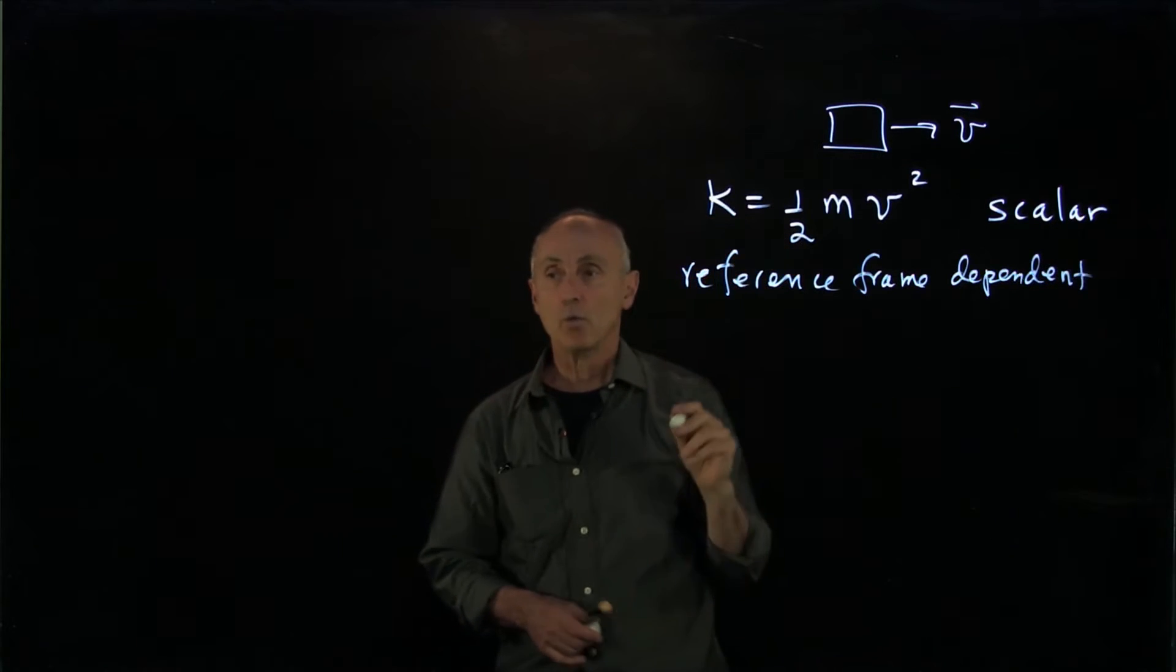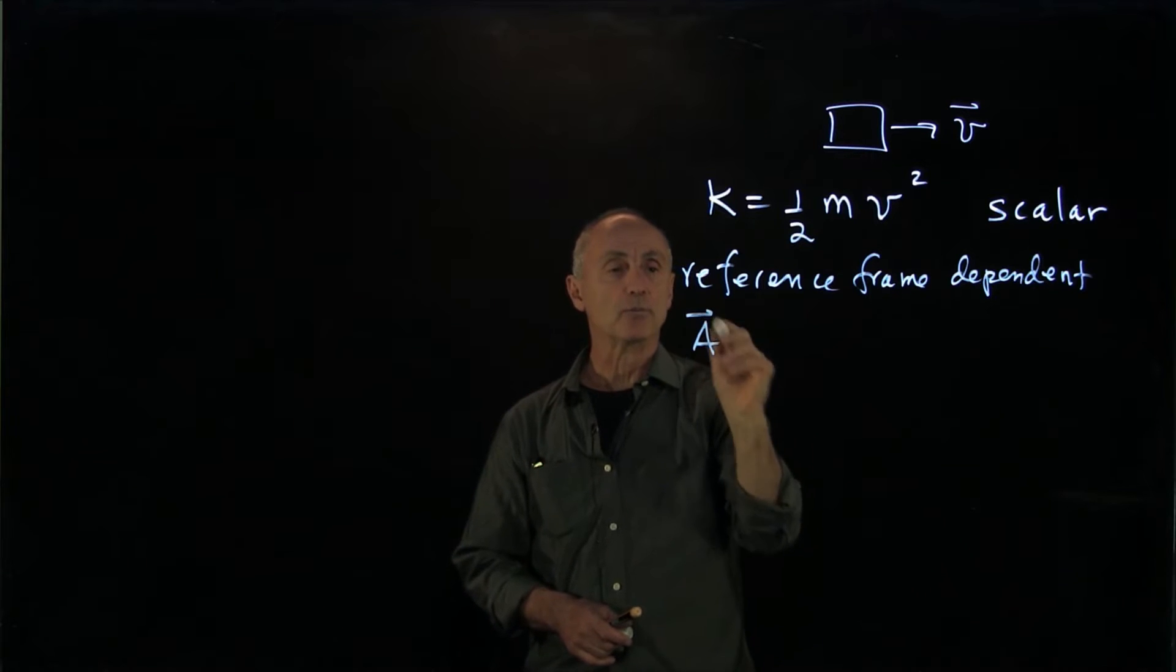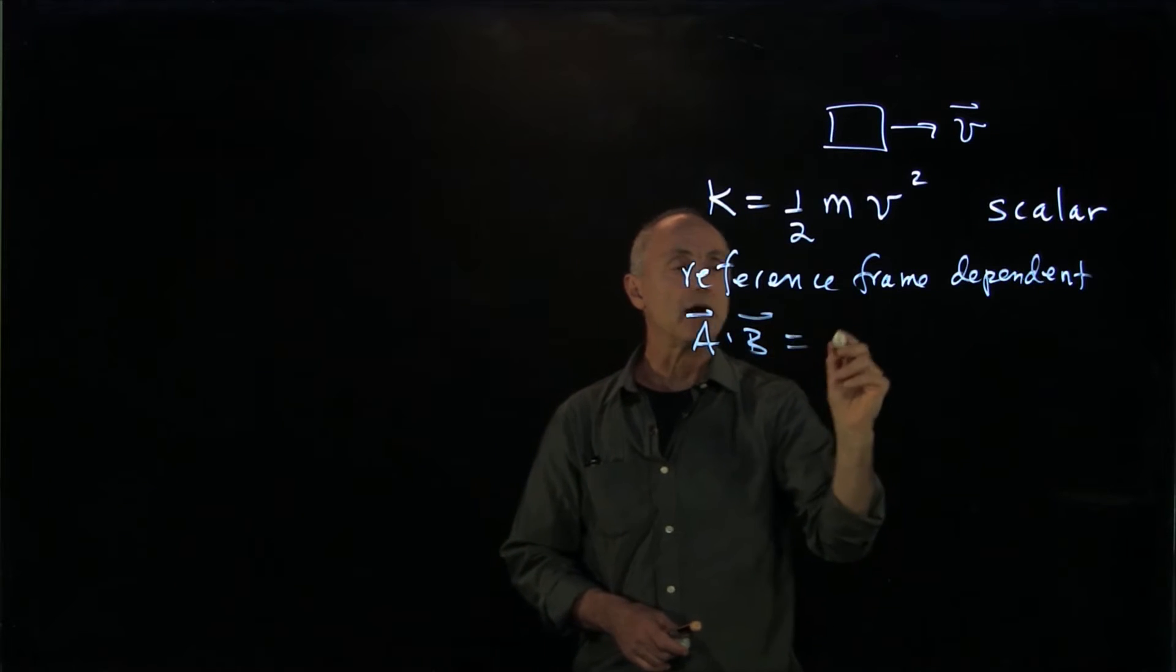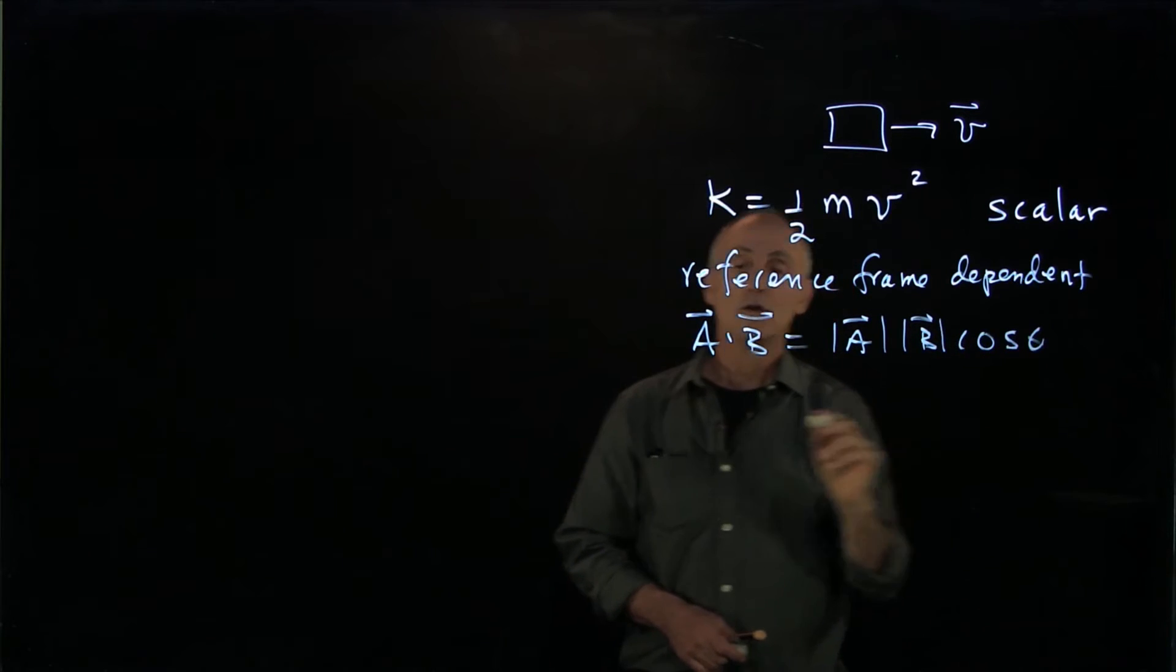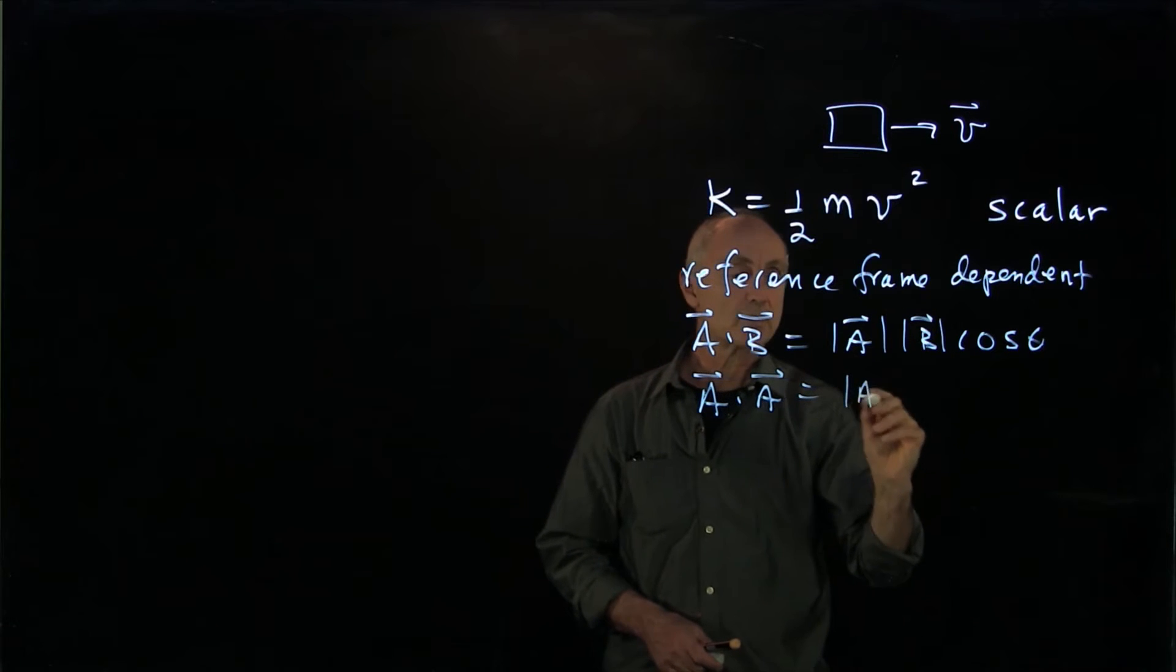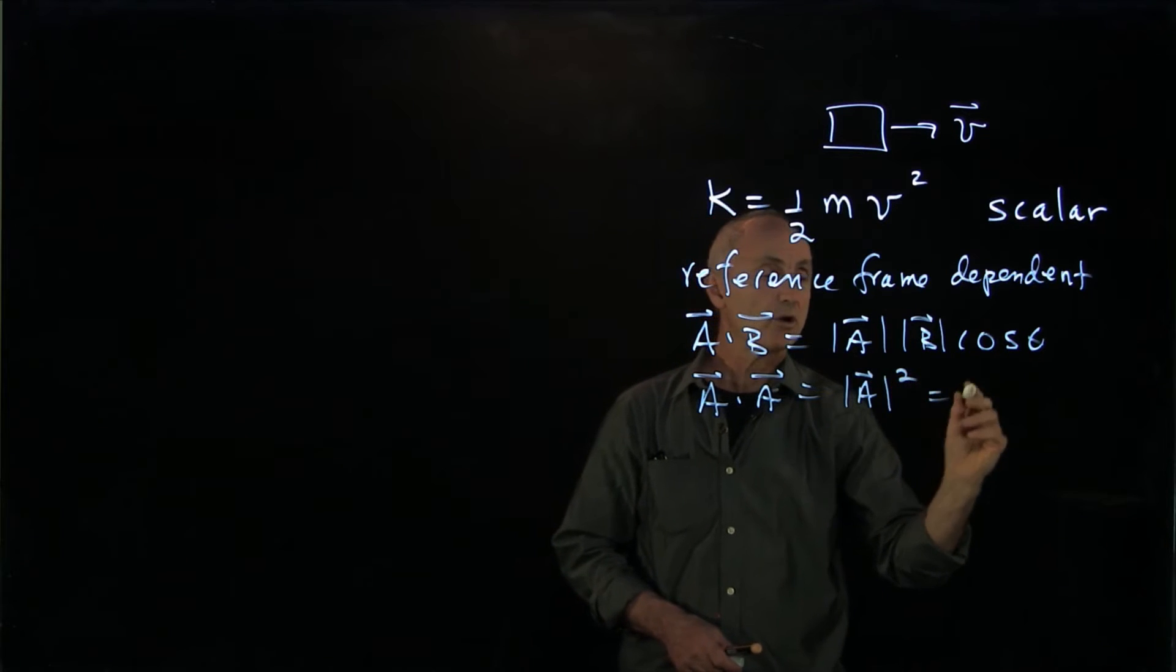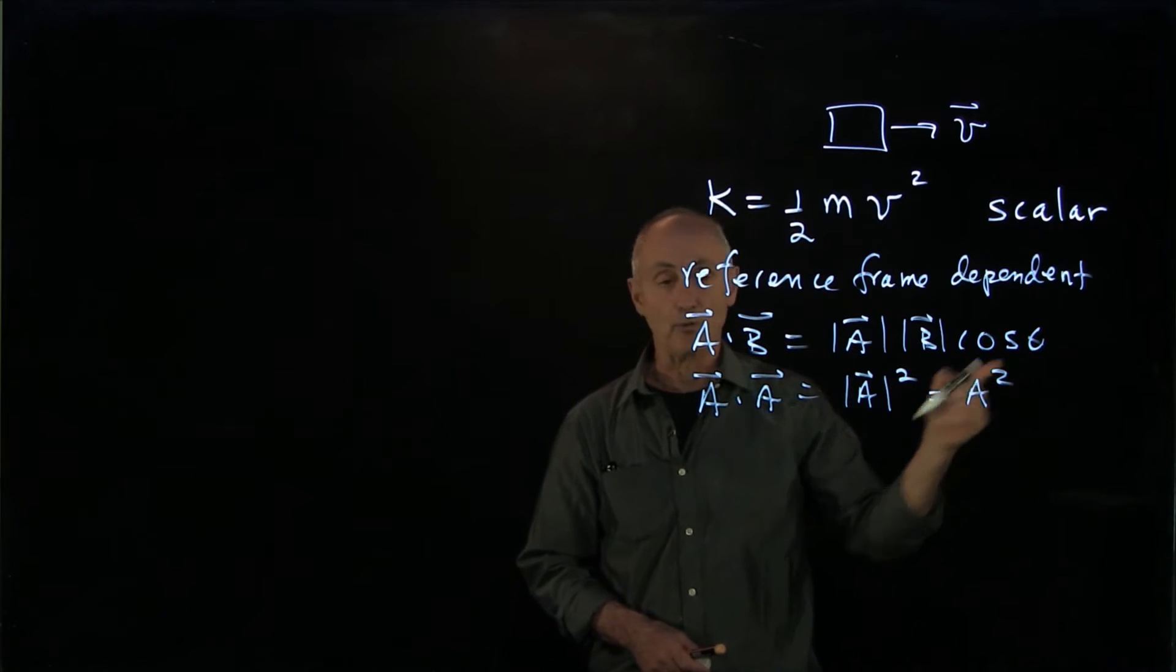Now, one thing to keep in mind is that remember our definition of scalar product: a dot b is the magnitude of a, magnitude of b times cosine of theta. So a vector dotted into itself is just the magnitude of a squared, which we can just write as a squared, because the angle is 0.